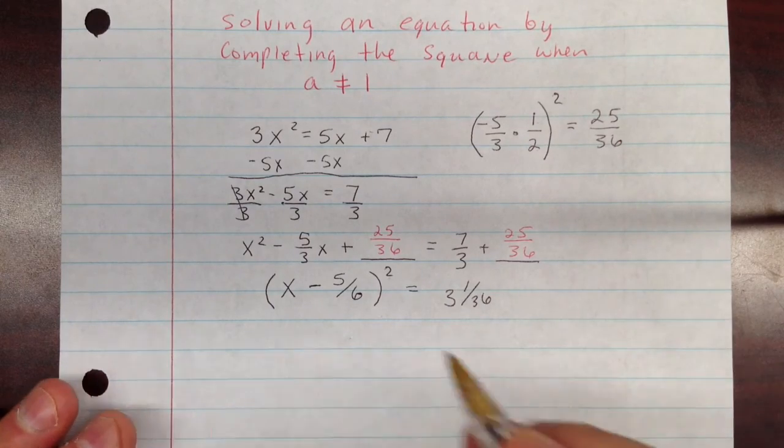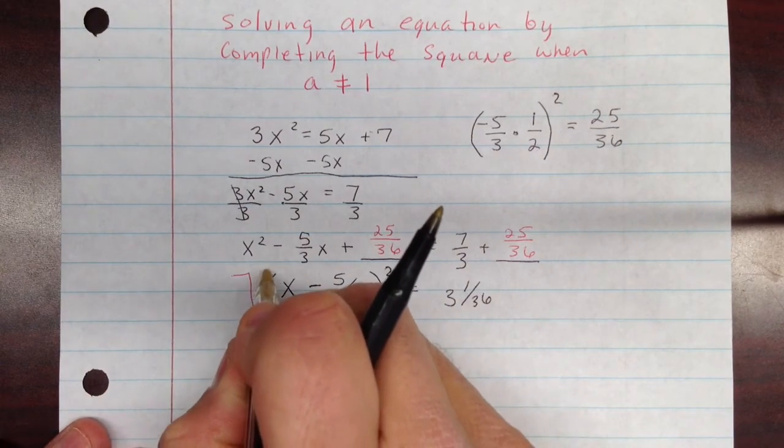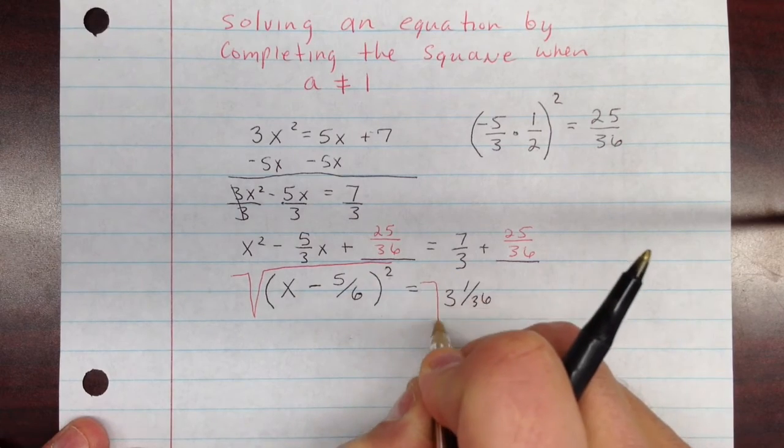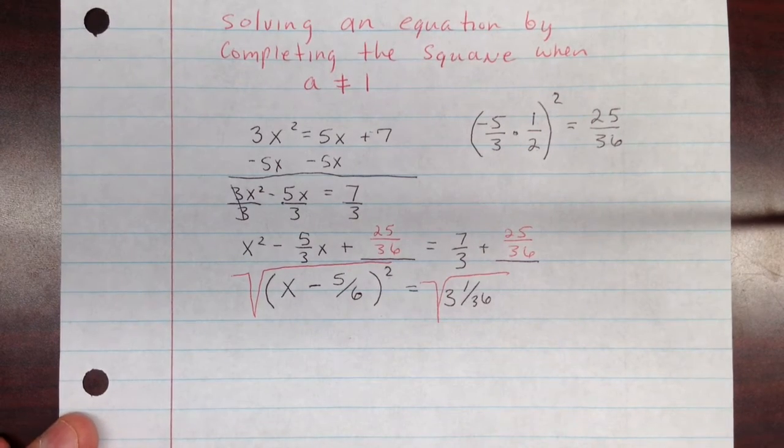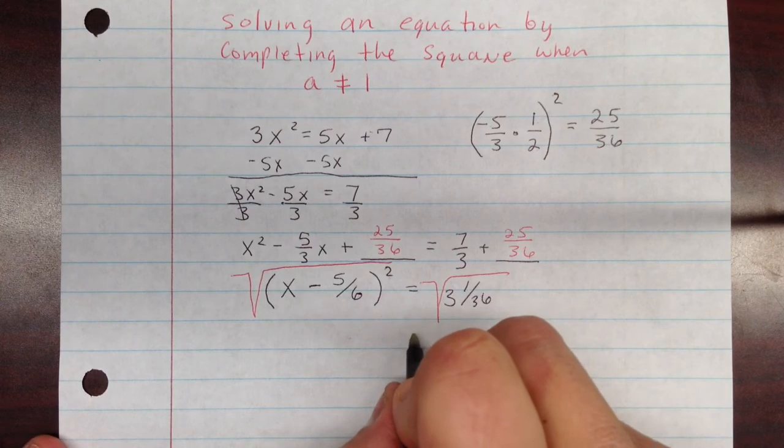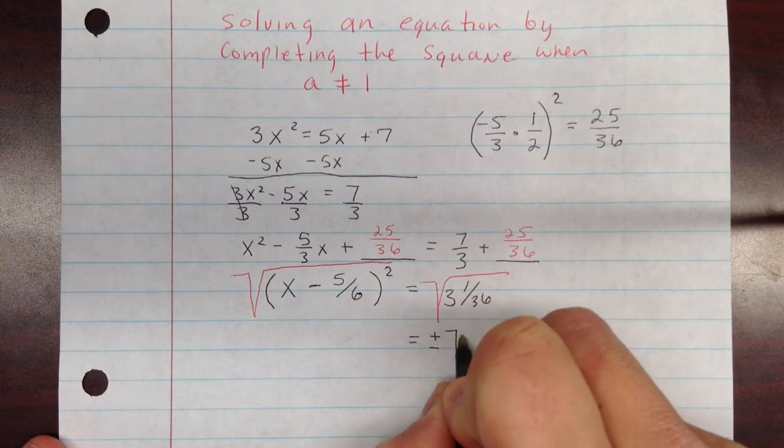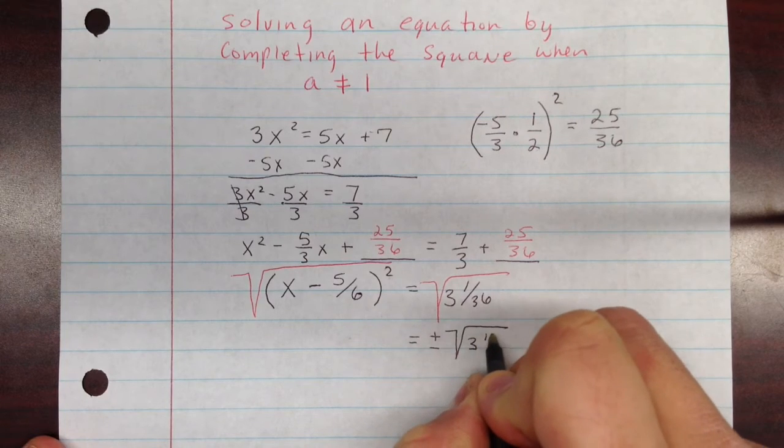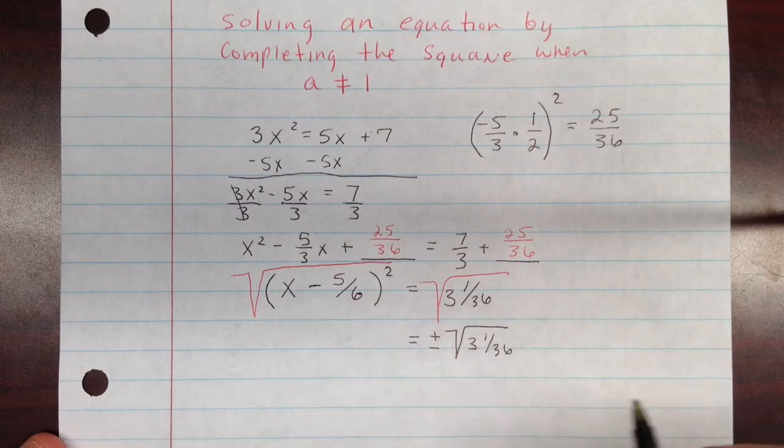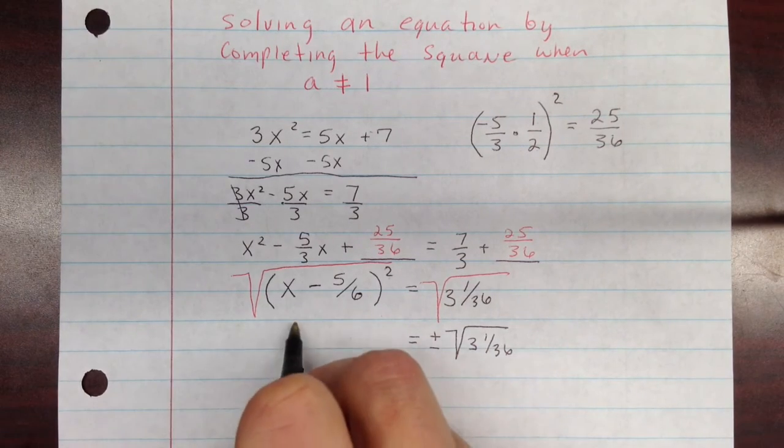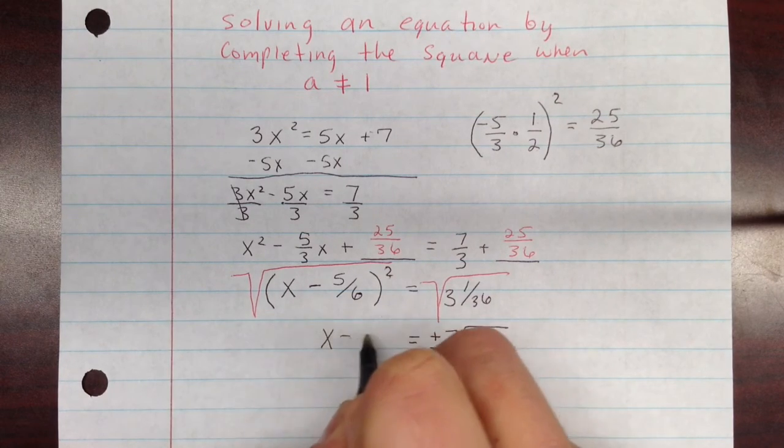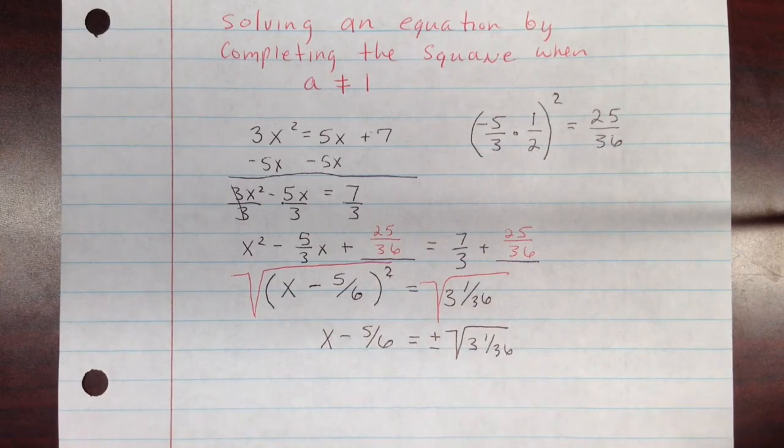Now we're going to take the square root of both sides to use the square root property. And since 3 and 1/36 is not a perfect square, we're going to leave it in there. So plus minus, that's our two choices for our answers there. We're going to have two answers because it's quadratic. And over here, the square root cancels this out. We get x minus 5/6.